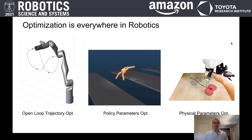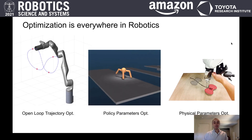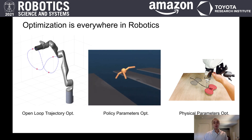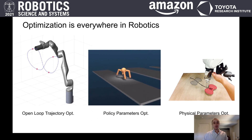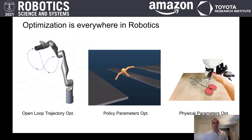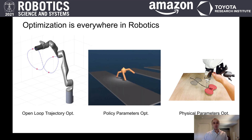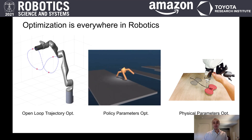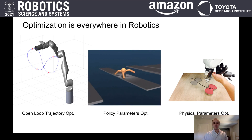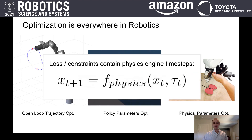Many challenges in robotics end up being cast as optimization problems. What is the best open-loop control for my robot? What are the best parameters for my policy? What are the physical parameters of my environment that would best explain my sensor data? Most optimization problems in robotics involve physics engine time steps in the definition of either the loss function and/or the constraints.